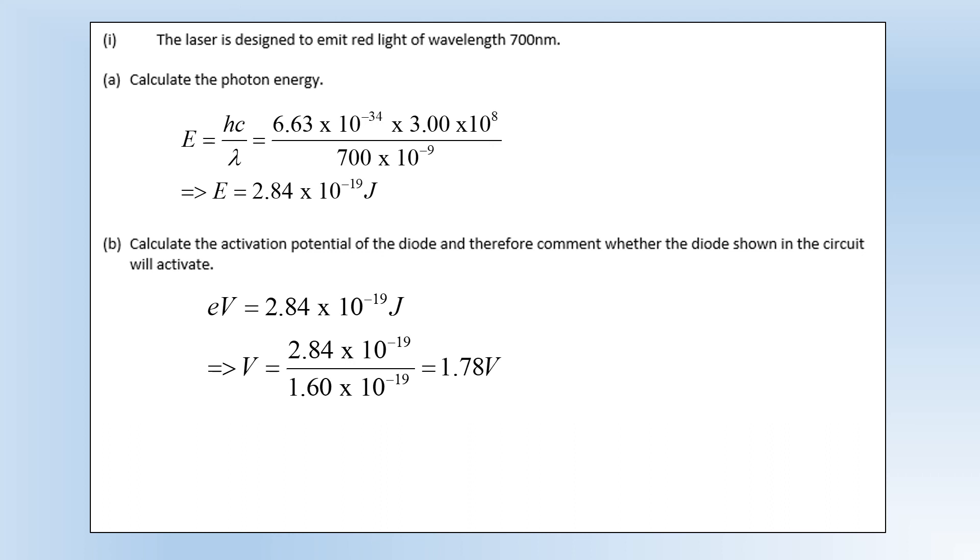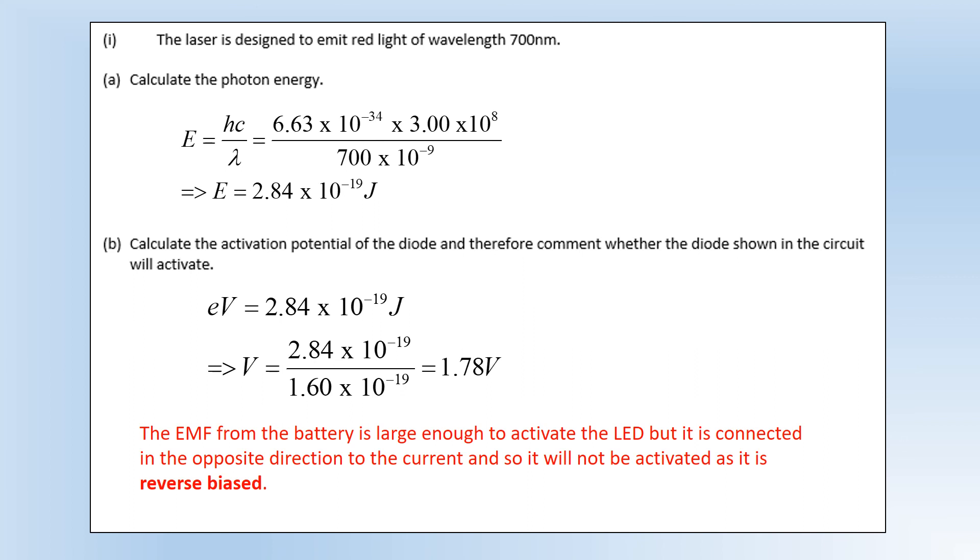So that means the work done by each electron that passes through the diode needs to be equal to the photon energy. So that's why eV is that, and so if you want the activation potential we just divide the energy by the electron charge, and that gives us an activation potential of 1.78 volts. So that looks pretty good because we're supplying an emf of 10 volts to the circuit, so that's fine. Except if you actually look at the circuit you'll see the LED is in the wrong direction and so it won't activate even though it's the right value. And that's why you don't get a flat earther to build any science stuff for you.